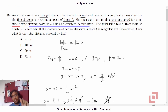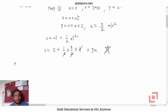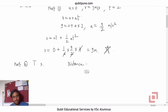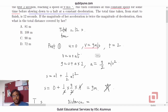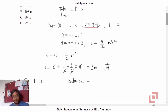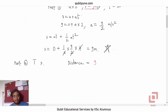Next, she continues at this constant speed for some time. The speed she has gained by accelerating — 9 meters per second — she continues to run at this constant speed for some time. The time is not given, so let us assume that time to be capital T seconds. The distance traveled in this part will be 9T meters. We still don't know T but we will come to it later.